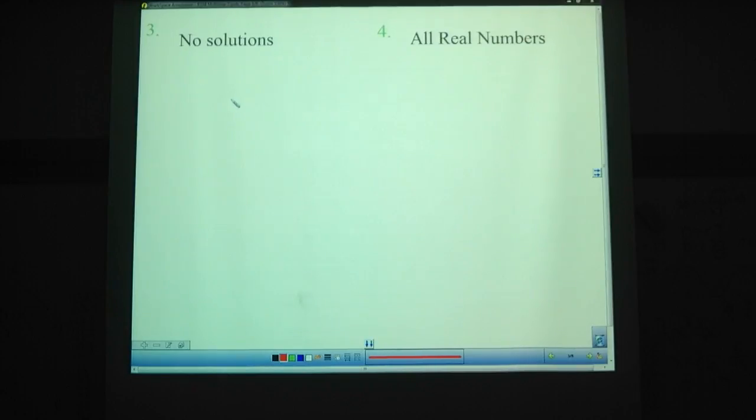No solutions was when we had something like 3 equals 4. We got rid of all the x's in the equation. What was left was 3 and 4, and those aren't equal. First bullet point: for no solutions, you have to have no unknowns left.